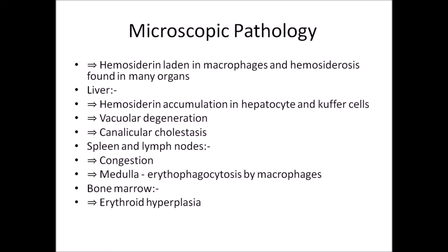Microscopic pathology: hemosiderin-laden macrophages and hemosiderosis are found in many organs. In the liver, hemosiderin accumulates in hepatocytes and Kupffer cells, and vacuolar degeneration along with canalicular cholestasis is seen. In the spleen and lymph nodes, there is congestion; the medulla of the spleen contains erythrophagocytosis by macrophages, and bone marrow shows erythroid hyperplasia.